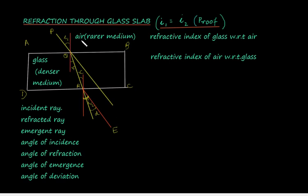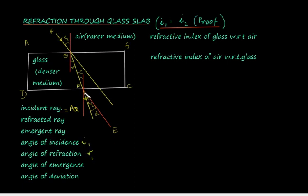Air is a rarer medium and glass is a denser medium. The incident ray is PQ. Since the ray is passing from a rarer medium to a denser medium, the ray which ought to have passed straight gets deviated by the principle of refraction and moves towards the normal. R1 is the angle of refraction, i1 is the angle of incidence, and QR is the refracted ray.